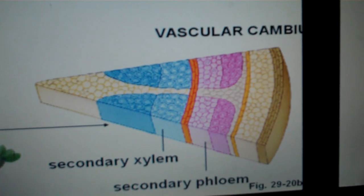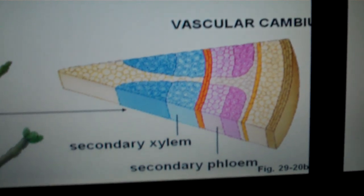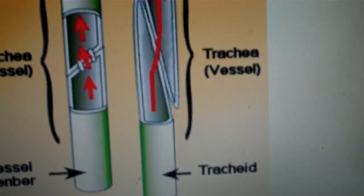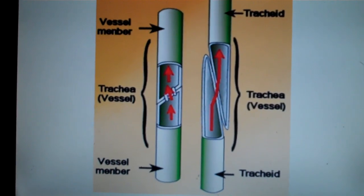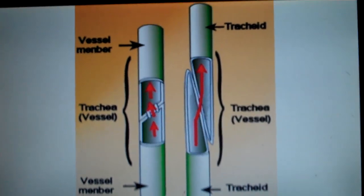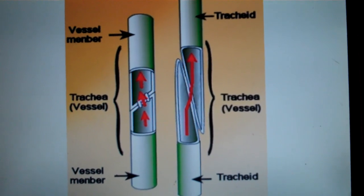Xylem, as we'll discuss in Chapter 30 Section 3, is made of vessel members and tracheids. These are tubes or tube-like cells that transport water through the plant.